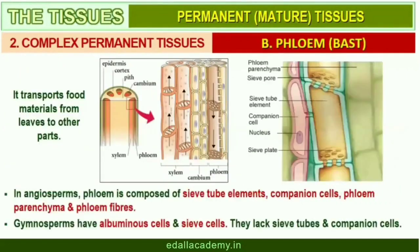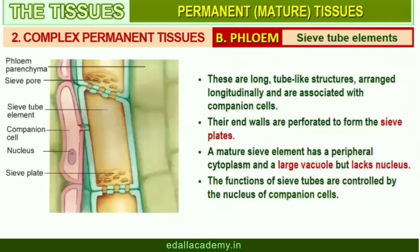Phloem transports food materials, usually from leaves to other parts of the plant. Phloem in angiosperms is composed of sieve tube elements, companion cells, phloem parenchyma, and phloem fibers. Gymnosperms have albuminous cells and sieve cells; they lack sieve tubes and companion cells. Sieve tube elements are long, tube-like structures, arranged longitudinally and associated with companion cells. Their end walls are perforated in a sieve-like manner to form the sieve plates.